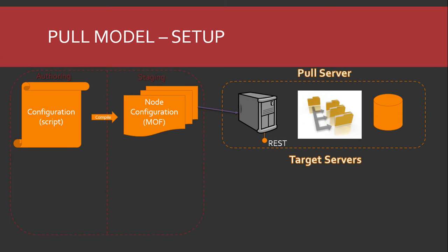I'm going to talk about how to set up a DSC pull server. There are two phases: actually standing up a pull server, and then connecting the target nodes to that pull server. In V1 and V2 they're very different, and there are lots of improvements in both steps. In the first step, you have a configuration, you push it out to the pull server, it sets up a REST endpoint over OData, sets up the file system, sets up a reporting database, and all that kind of stuff.